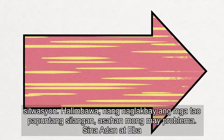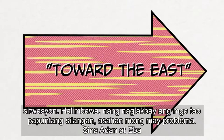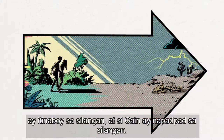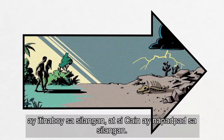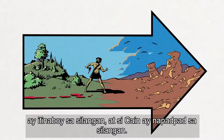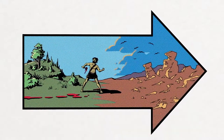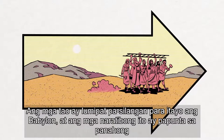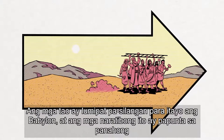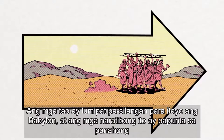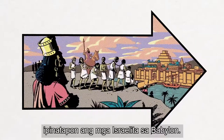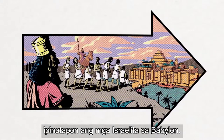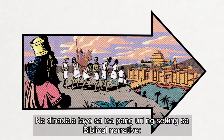For example, when people move toward the east, expect trouble. Adam and Eve were banished to the east, and then Cain wanders to the east. People move to the east to build Babylon. All of these narratives are designed to point forward to when the Israelites as a people will be exiled to the east in Babylon.